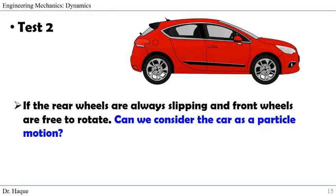Let's try another test. In this problem, the car has front and rear wheels. If the rear wheels are always slipping and the front wheels are free to rotate, can we consider the car as particle motion? The answer is no — we cannot assume this car as a particle because we are now talking about each of the tires individually, and the tires are not in the same condition. One tire is slipping and another is not. Since we are focused on those individual tires, we cannot take the entire car as a particle. So this is not a particle motion problem.